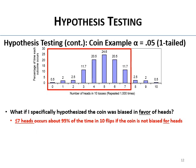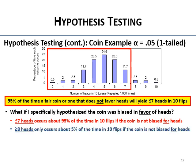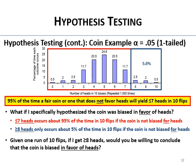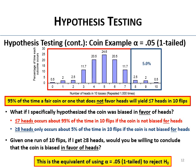Since my hypothesis is that the coin is biased in favor of heads, I put all that probability on the upper end of the distribution. Seven or fewer heads happens about 95% of the time if the coin is not biased for heads. Eight or more heads occurs about 5% of the time in 10 flips. Even if the null is true — the coin is fair — you still occasionally get eight or more, but it's very unlikely. That 5% is all in one tail of the distribution. If given 10 flips I get eight or more heads, that's using alpha 0.05 one-tailed to reject the null.